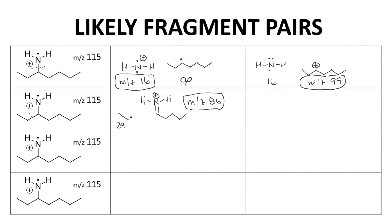We could also fragment off of bond B to give this neutral fragment. Our cation is Mz of 29, and the neutral fragment is 86, unobserved.